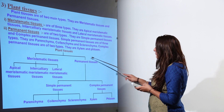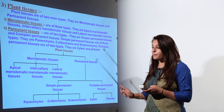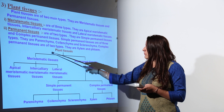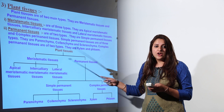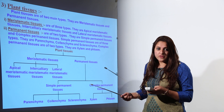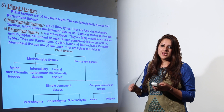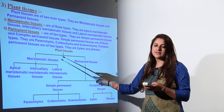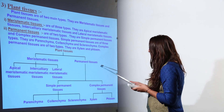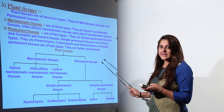Permanent tissue is tissue which does not divide, whereas meristematic tissue is tissue which actively divides. Meristematic tissue is present in areas of plants that are continuously growing, like the growing tips of stems and roots, and they divide continuously throughout the life of a plant. The meristematic region therefore consists of the growing parts of the plant.